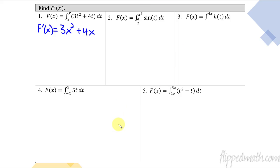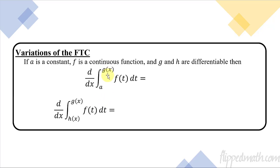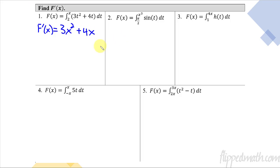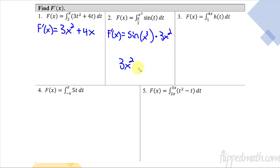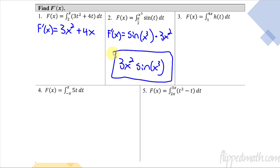Now let's do ones that are a little bit harder. Sometimes the upper bound isn't just x but a whole expression — I'm going to call it g(x). If you have that, you plug in g(x) still, then you have to apply the chain rule. The chain rule — the onion rule that makes you cry — makes us multiply by the derivative of what we just plugged in. So on this example, F prime of x equals: take x³ and plug it in, giving sine of x³, then multiply by the derivative of what you plugged in, which is 3x². So the answer is 3x² · sin(x³).